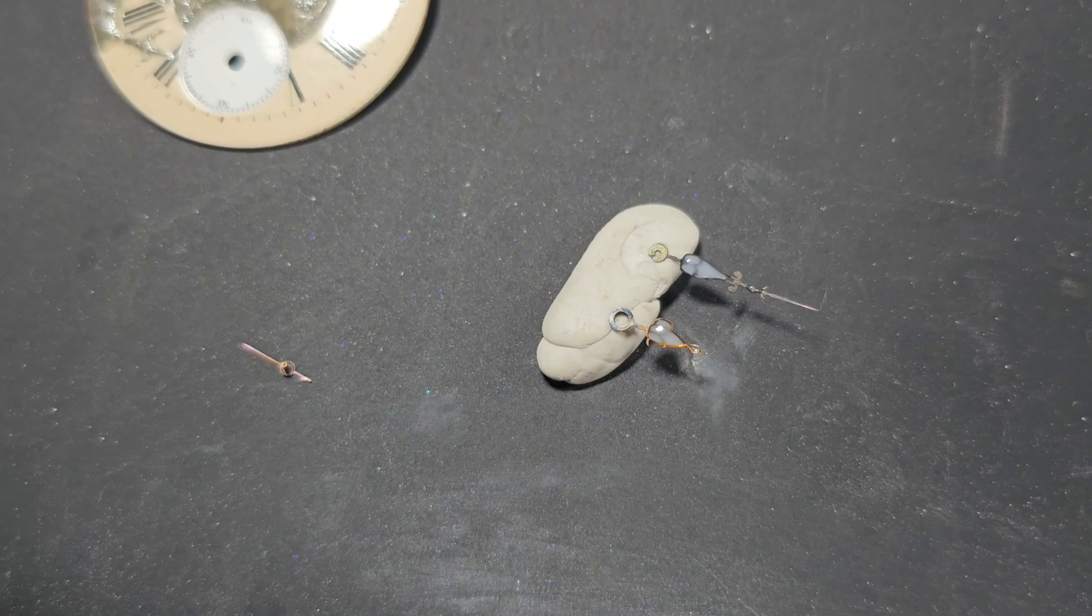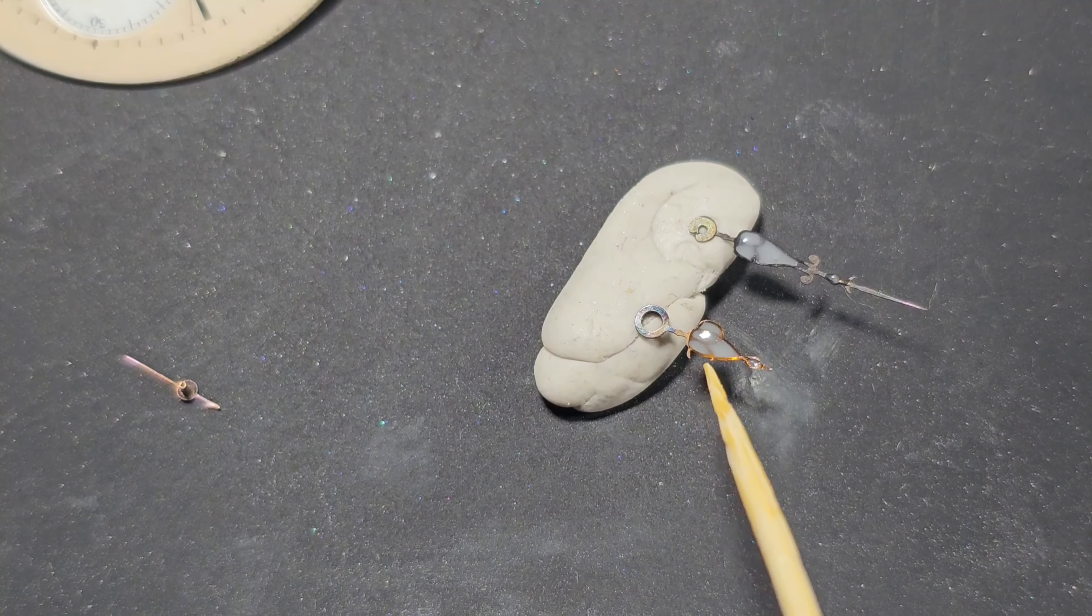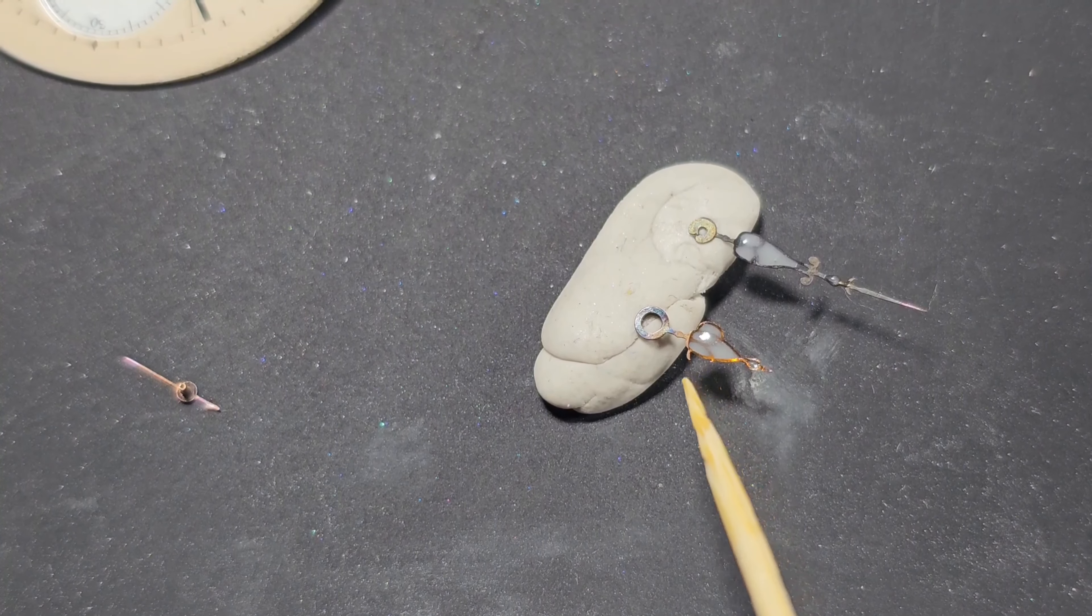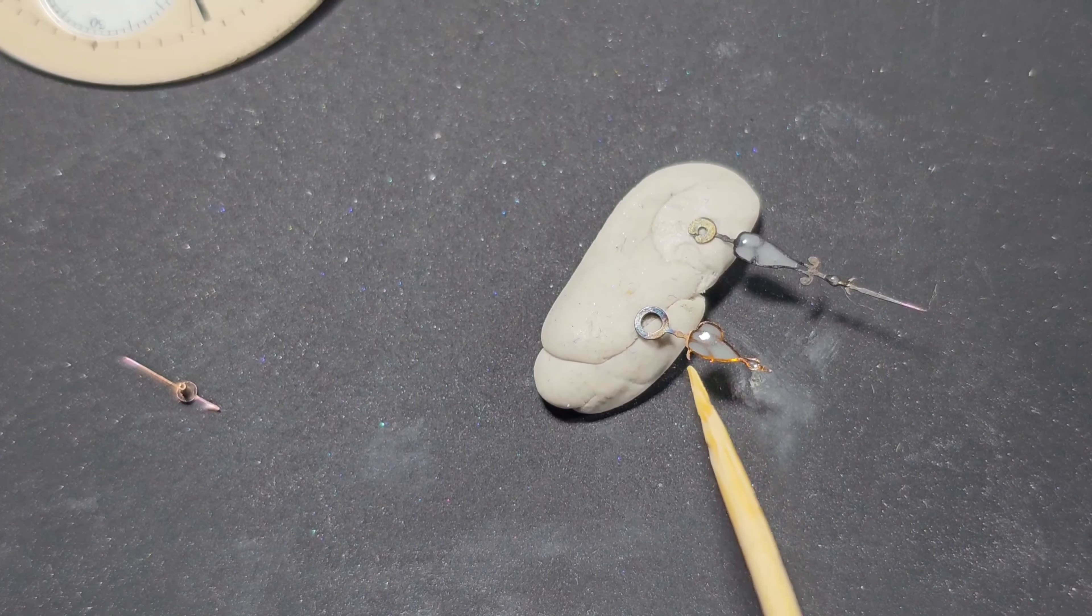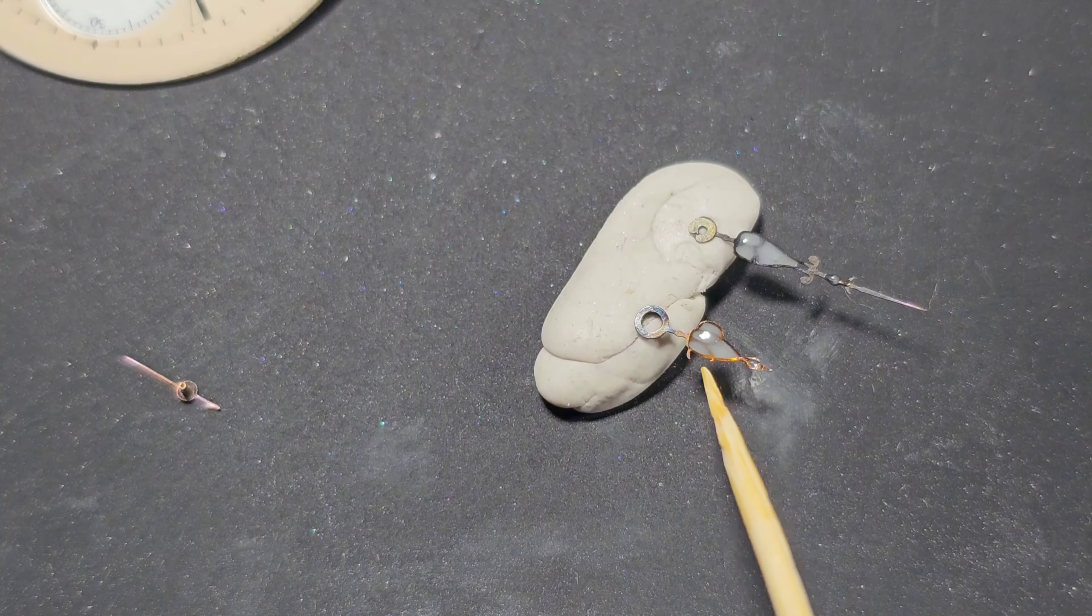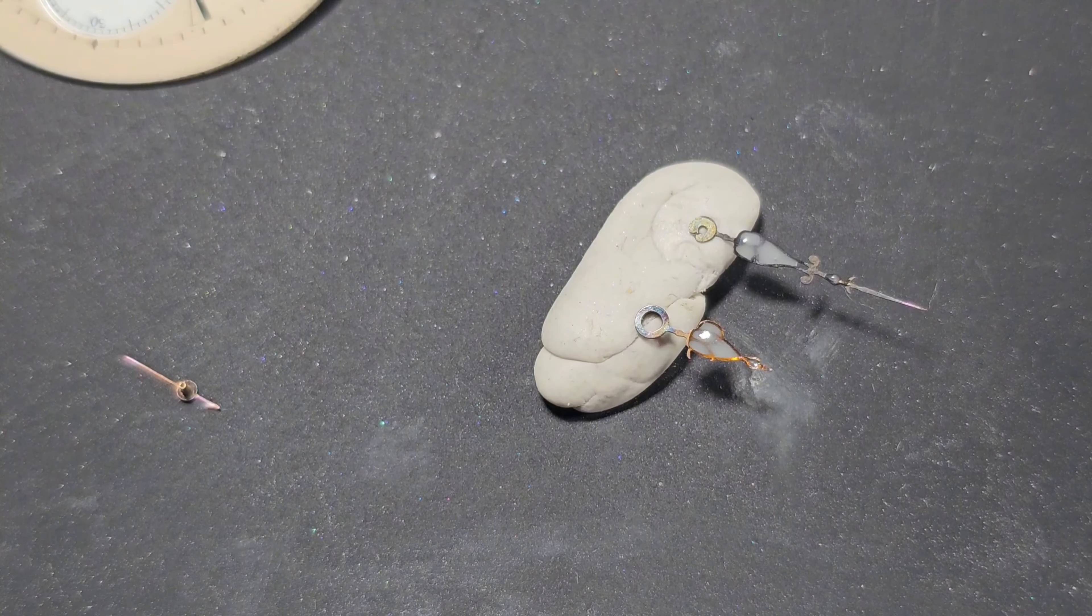Now I don't know if you can see on that hour hand there has been some damage. I don't think I did that. Well I hope not anyway. I can't see the missing piece anywhere. But there's a little bit missing here. But I'm going to keep it as it is because that is the character of the hands.